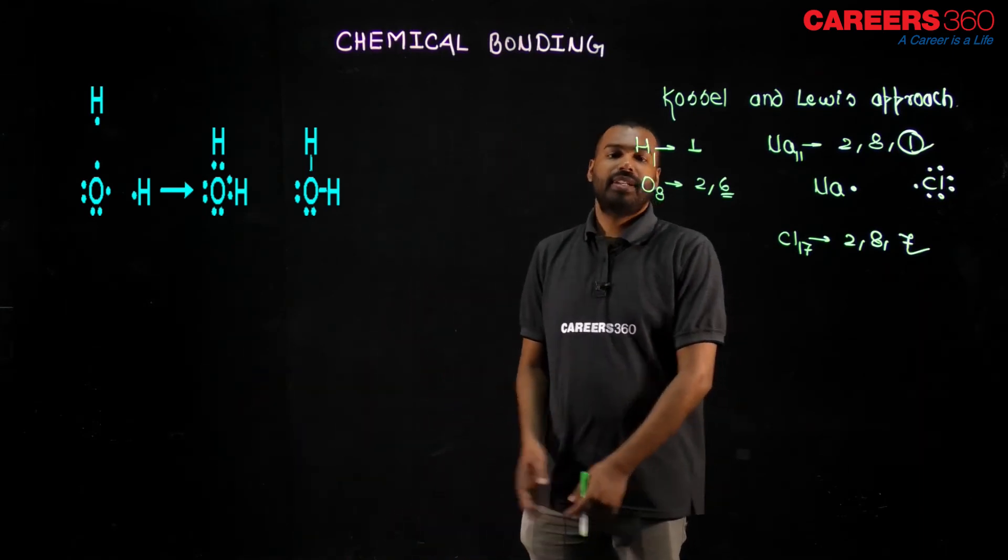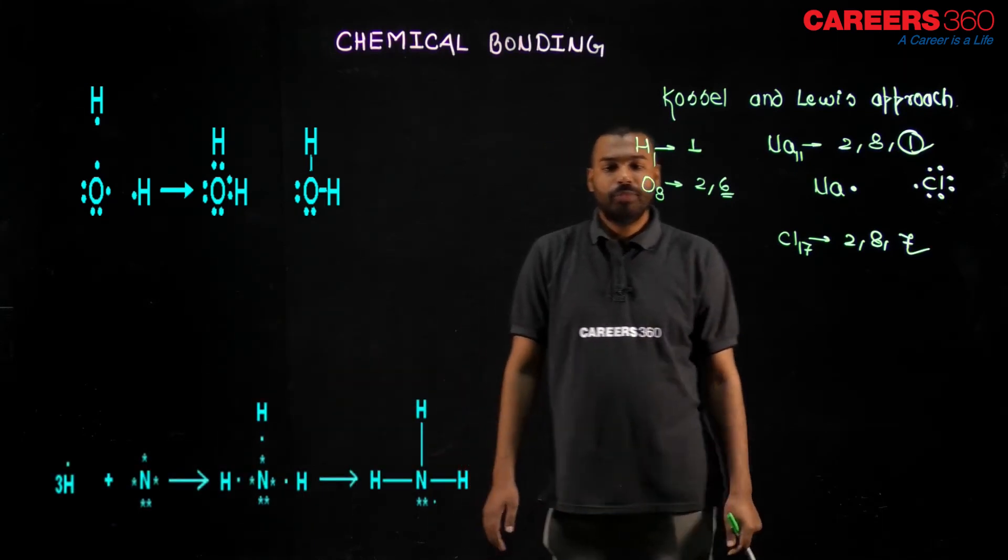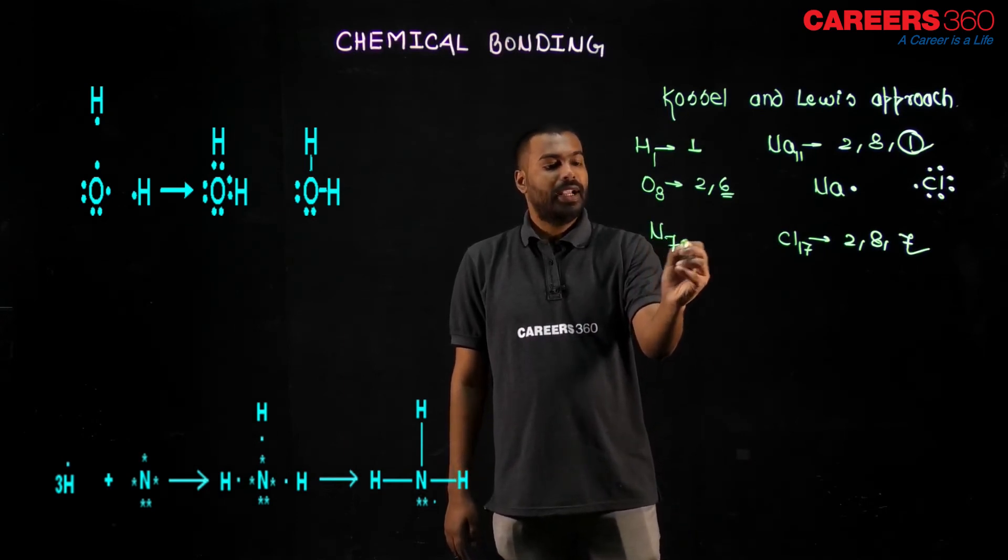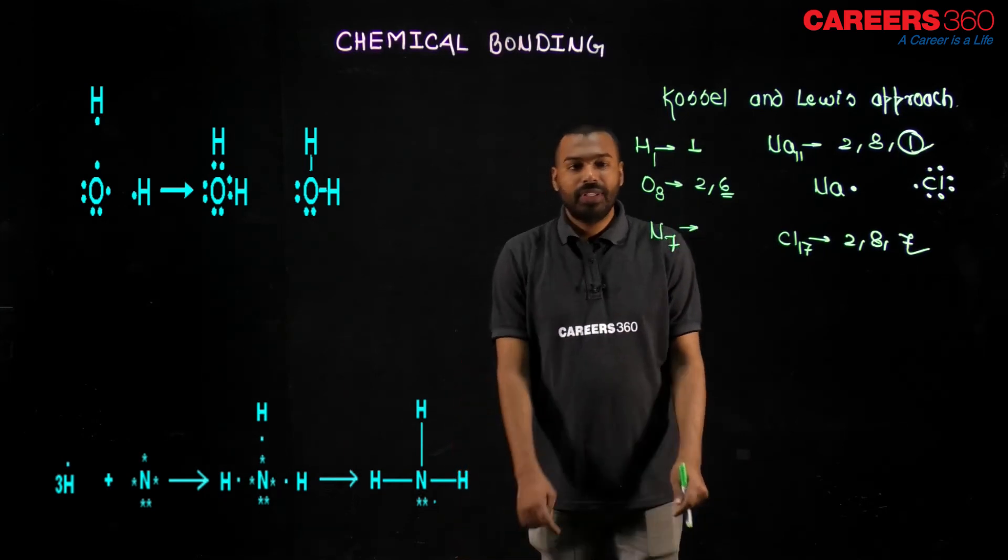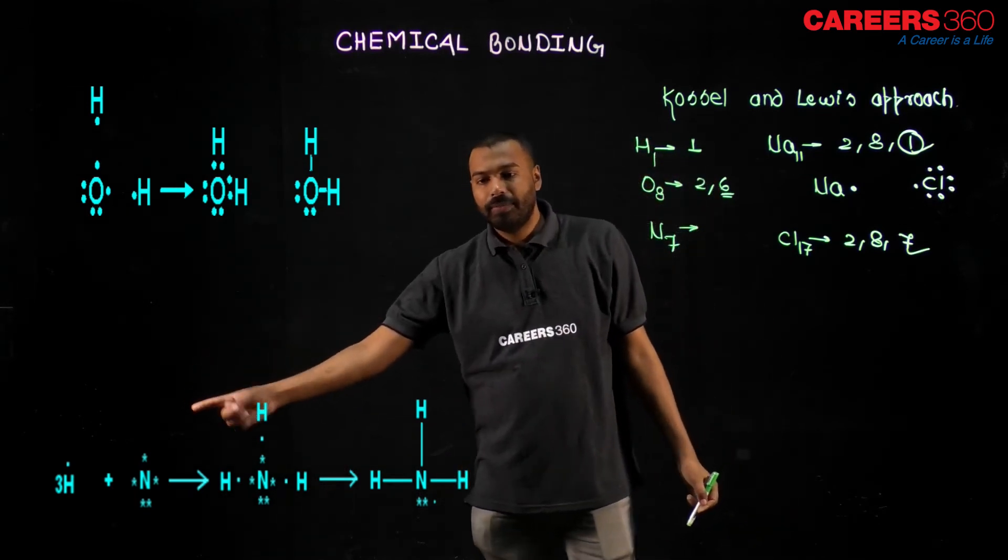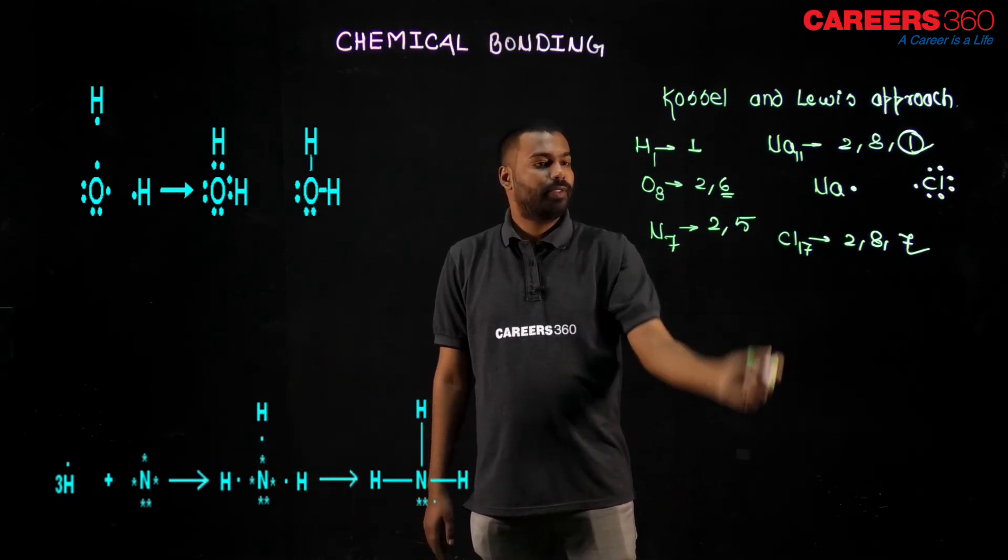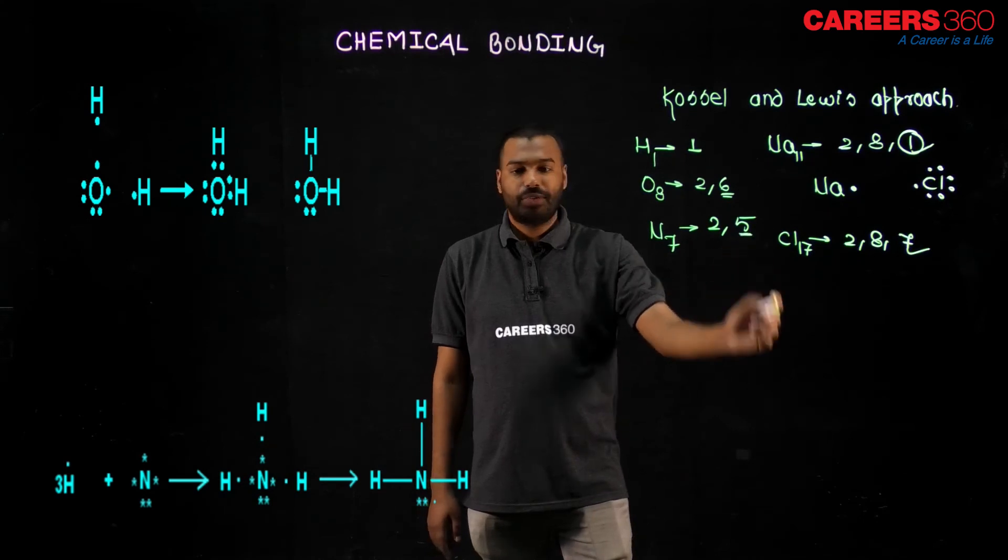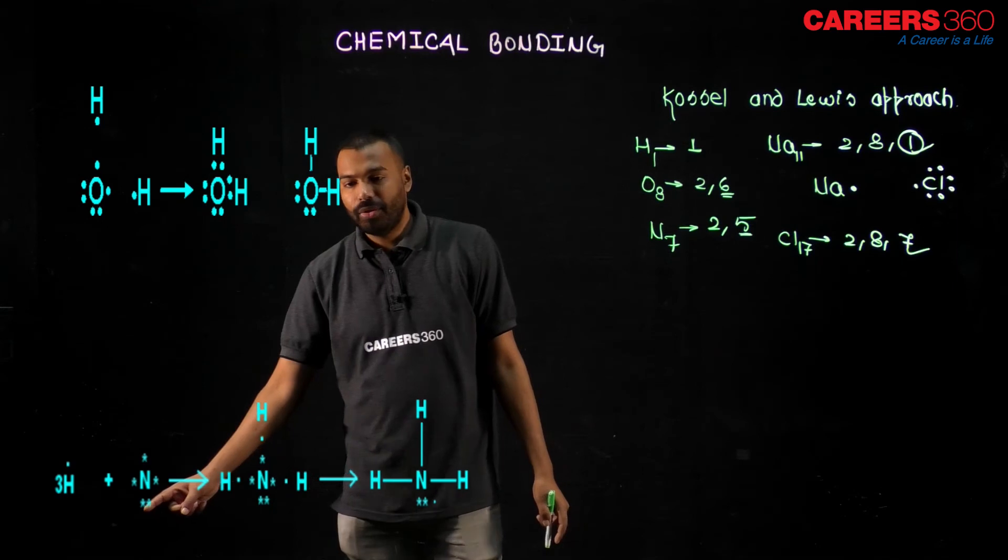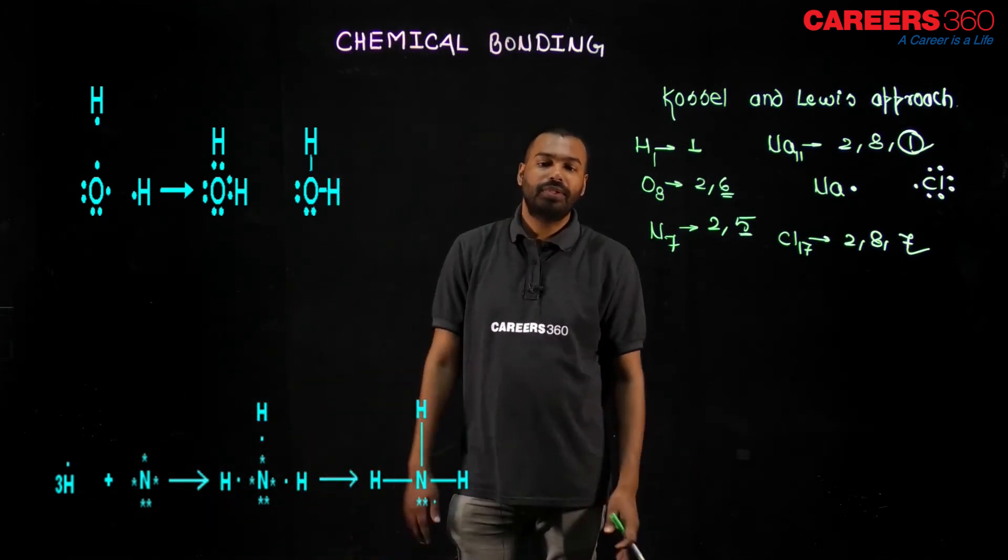Next example now. See, this is the ammonia formation. Ammonia has nitrogen and hydrogen. Hydrogen has one atomic number, so one electron in the valence shell. So one dot there. Can you see that? And nitrogen has 7 atomic number, so 2, 5. So 5 is the valence electron. That is why nitrogen has 5 dots. See here. How many dots? 1, 2, 3, 4, 5. That is it. This is the Lewis dot structure.